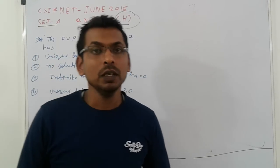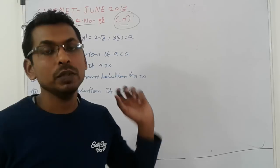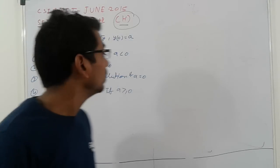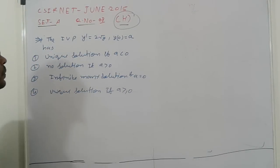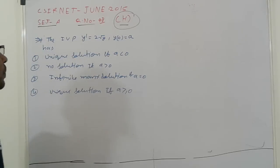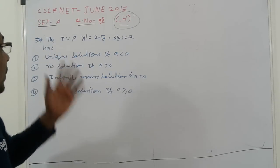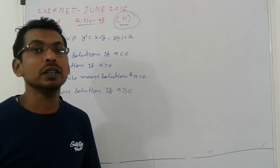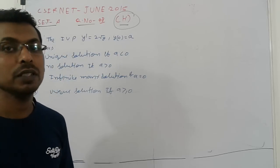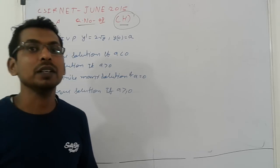Hello friends, again taking problems from CSIR NET June 2015, Set A, equation number 48. This problem is related to linear differential equations, specifically about uniqueness of existence, unique solution, infinite solutions, or no solution.